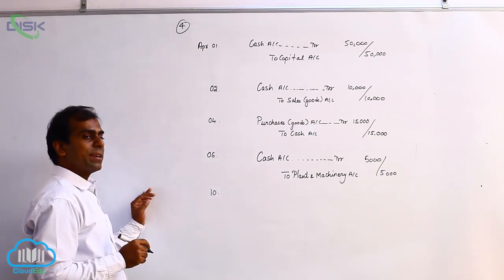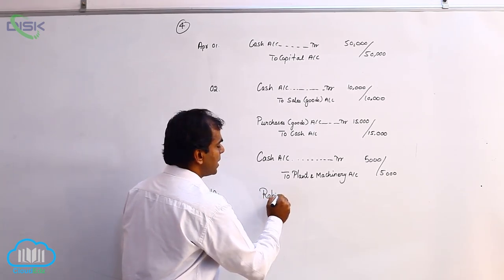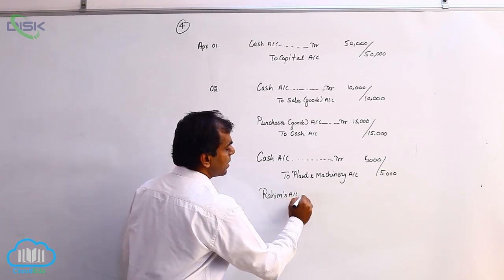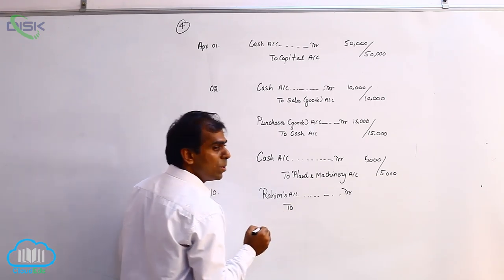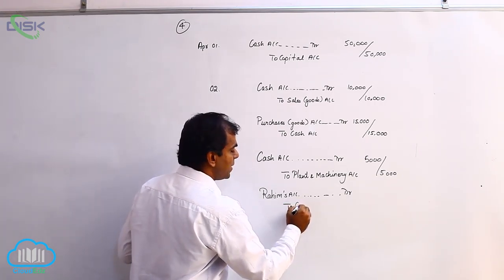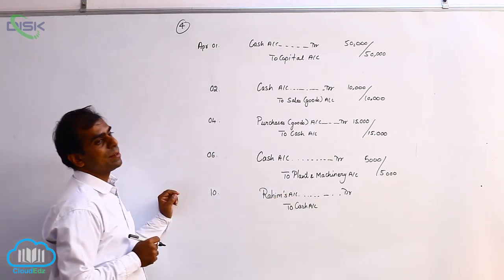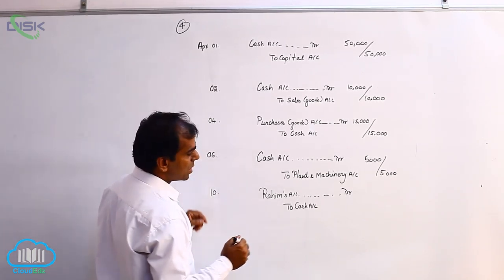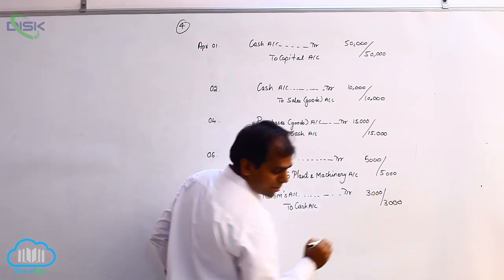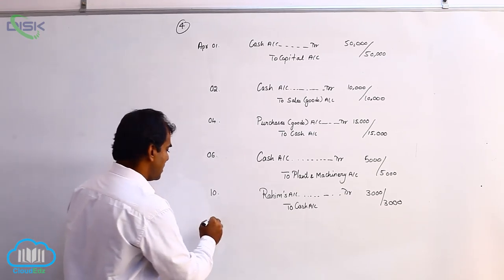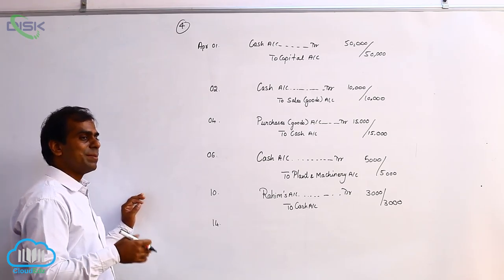The next transaction: cash paid to Rahim. You are paying cash to Rahim, so Rahim is the receiver. Applying the rule of personal account, the receiver gets debited — Rahim's account debit. Cash is a real account going out, so applying the rule credit what goes out, we credit cash. The journal entry: Rahim's account debit to cash, the amount being 3,000.